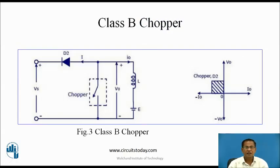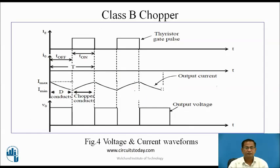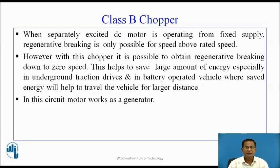Class B chopper — this is the circuit diagram for the Class B chopper. When a separately excited DC motor is operating from a fixed supply, regenerative braking is only possible for speeds above rated speed. However, with this chopper, it is possible to obtain regenerative braking down to zero speed. This helps to save a large amount of energy, especially in underground traction drives and in battery operated vehicles, where saved energy will help the vehicles travel a larger distance.